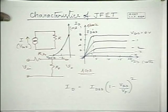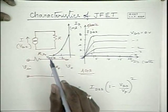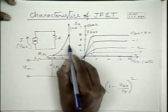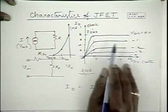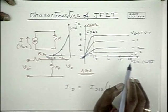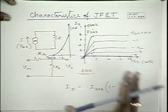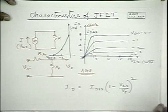Now once the transfer characteristics is given to you — it is known as the transfer characteristics because it is between an input quantity and an output quantity — once VGS is given, for a particular VGS, ID is fixed. So once ID is fixed, depending on VDS and the supply voltage, you will have a particular VDS and ID point on these characteristics. So VGS defines ID in this particular case.